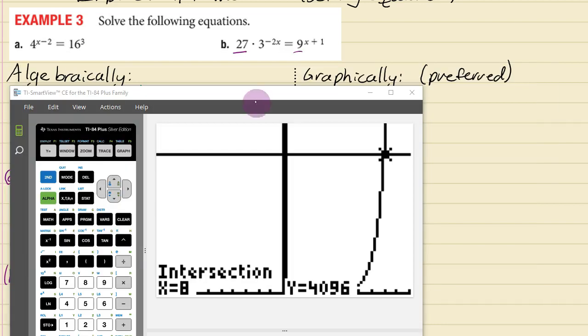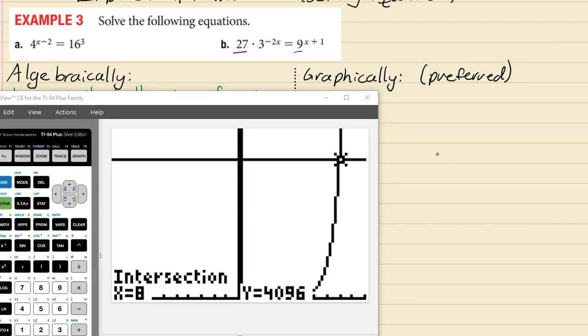And that is the intersection point there at x equals 8. So that is how you can get the first one by graphing. You just get x equals 8 from the graph.